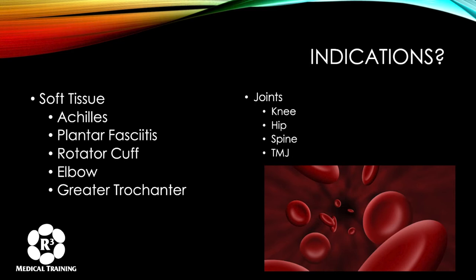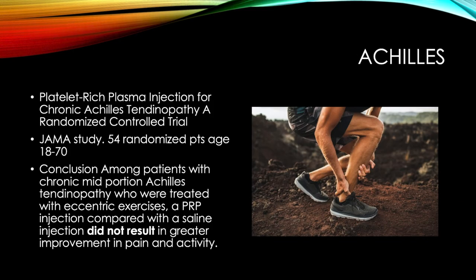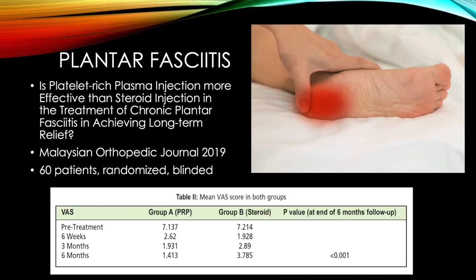For Achilles tendinitis, a JAMA study looked at a PRP injection for chronic Achilles tendinopathy in over 50 patients aged 18 to 70. This was chronic mid-portion Achilles tendinopathy versus a saline injection, and it did not result in greater improvement in pain and activity — lending an argument against PRP for this type of Achilles tendinopathy.